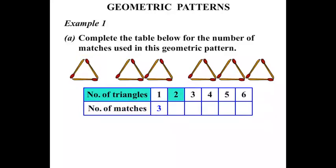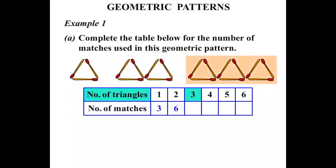When there were two triangles, the number of matches — let's count that — three and another three made six. When there were three triangles, three and three and three is nine, going up by three each time. So when there are four triangles, we don't have that picture but the number of matches would be another three, which is twelve.